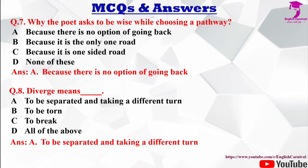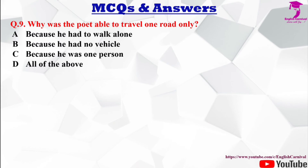Question number 9: Why was the poet able to travel one road only? Options: A) because he had to walk alone, B) because he had no vehicle, C) because he was one person, D) all of the above. The correct answer is C — because he was one person.